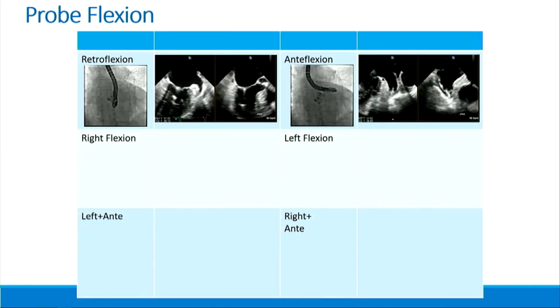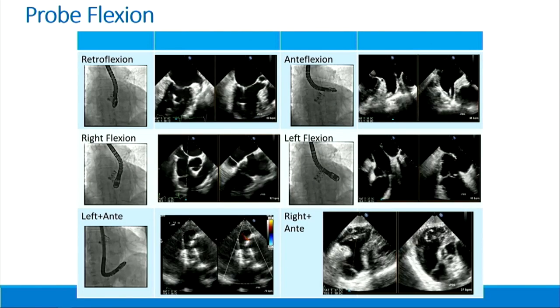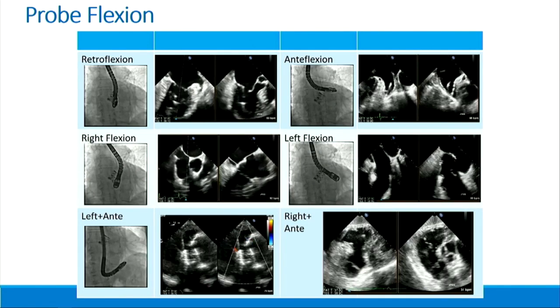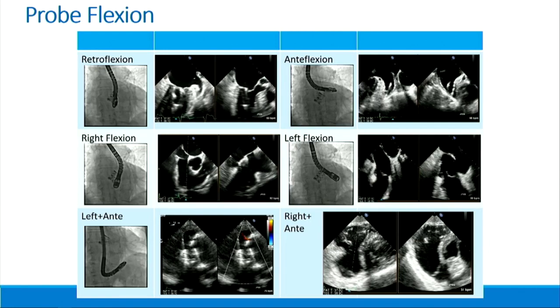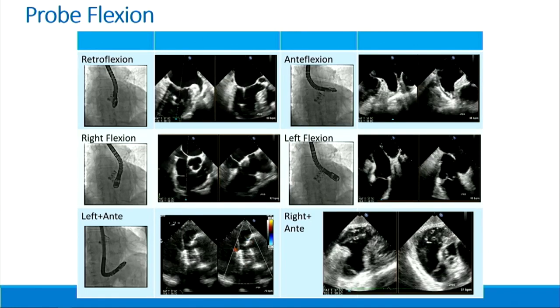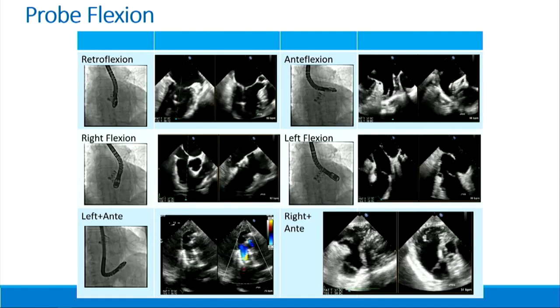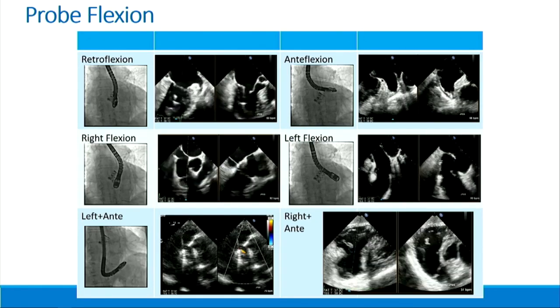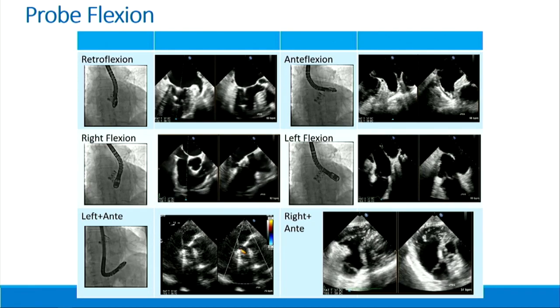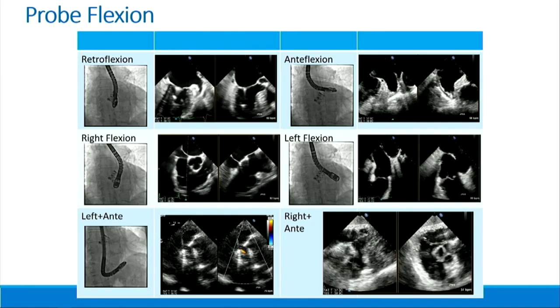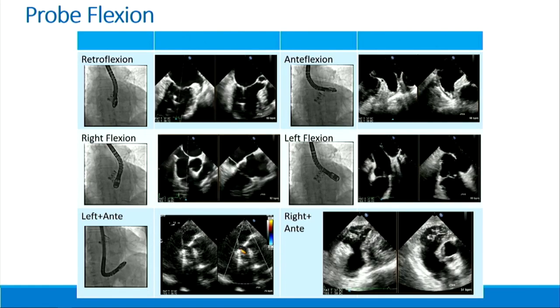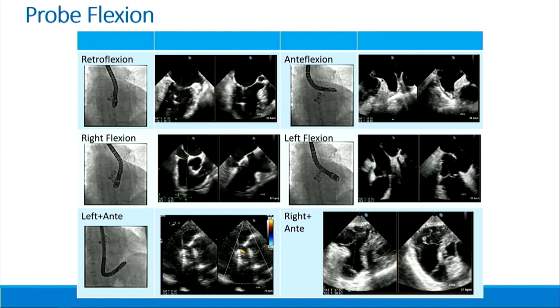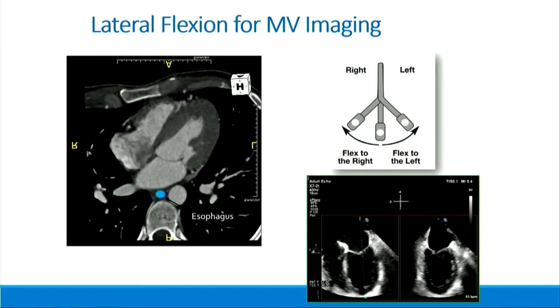This is just an example of probe manipulation, showing that the esophagus is movable within the chest. Maximal anti and left combinations of views should be done with caution. The bottom panels are in the fundus of the stomach, where we have the most room to manipulate the probe. That right flex and anti-flex gives you these beautiful transgastric views of the tricuspid valve, which we use all the time, and it's that lateral flexion that really helps.